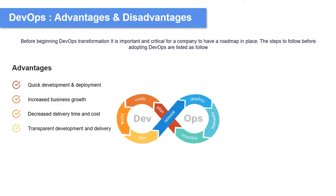Another advantage is transparent development and delivery. DevOps is all about transparency because it clarifies the various processes involved and their descriptions, so that transparency is at the heart of the software development process in DevOps.